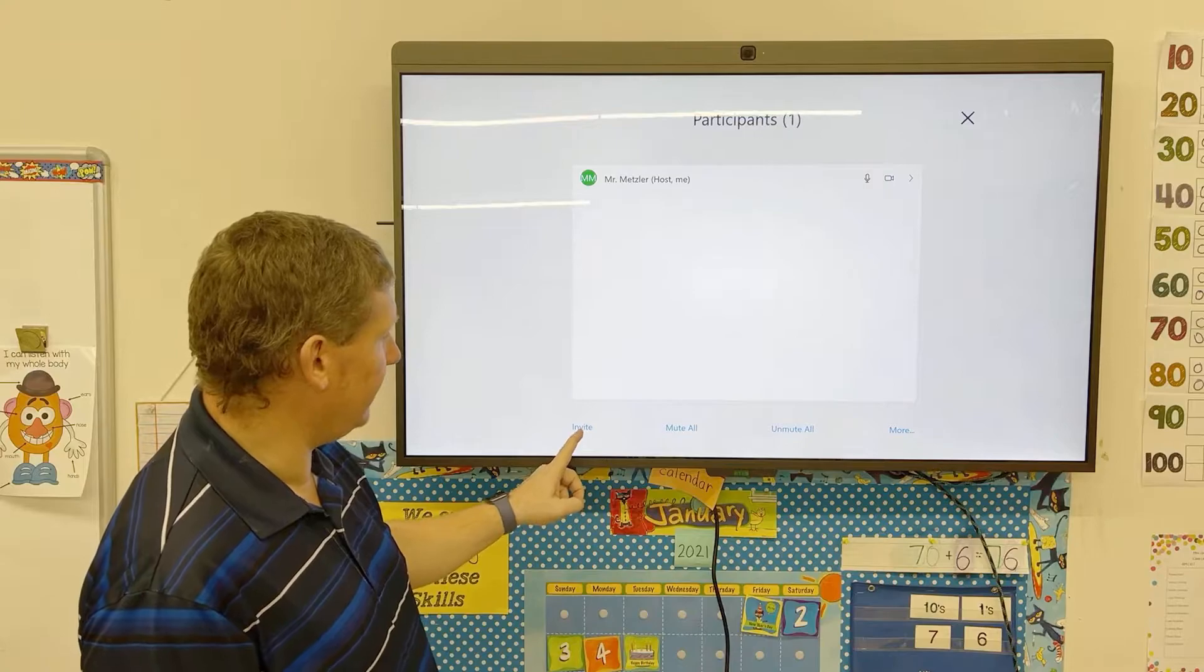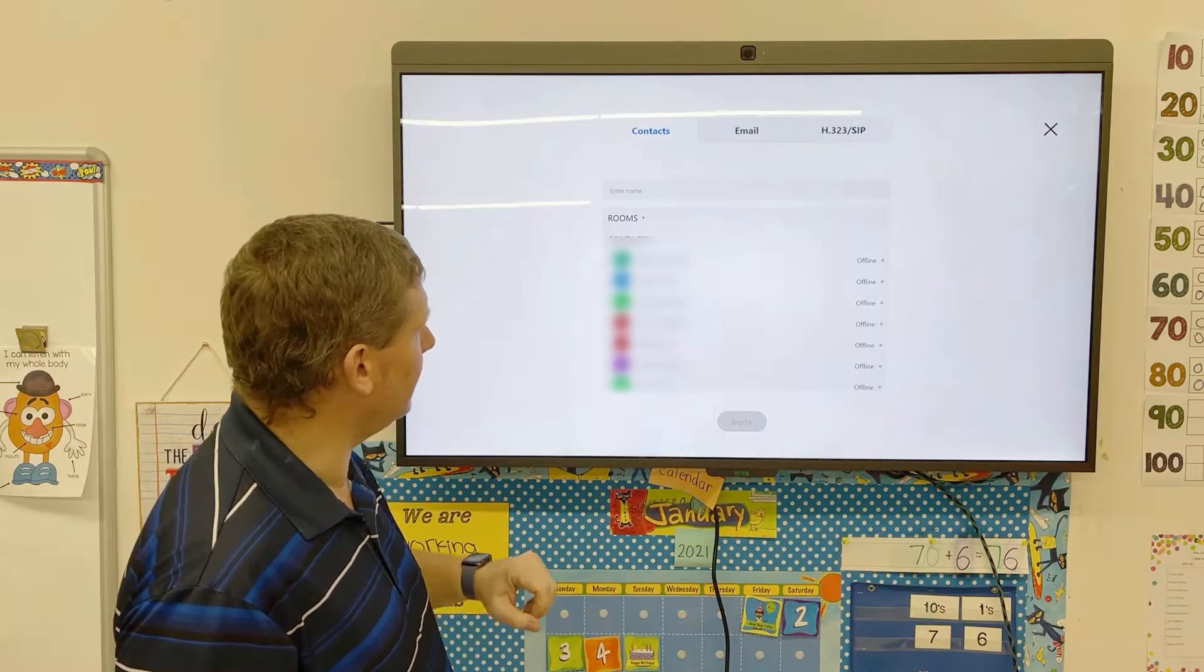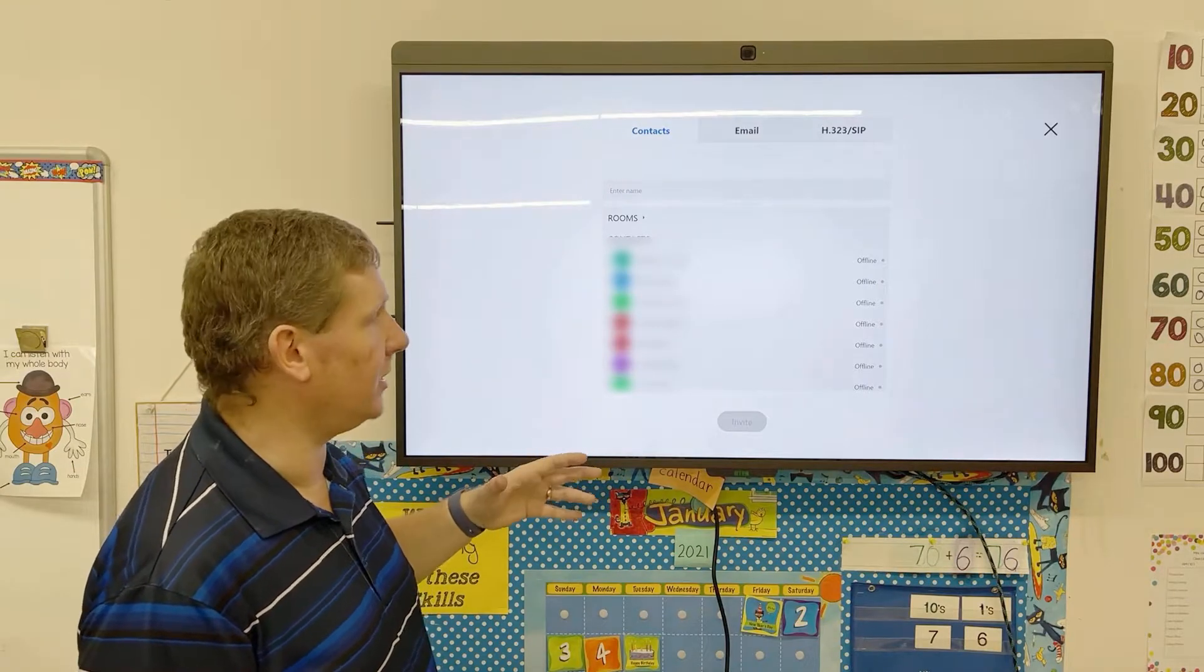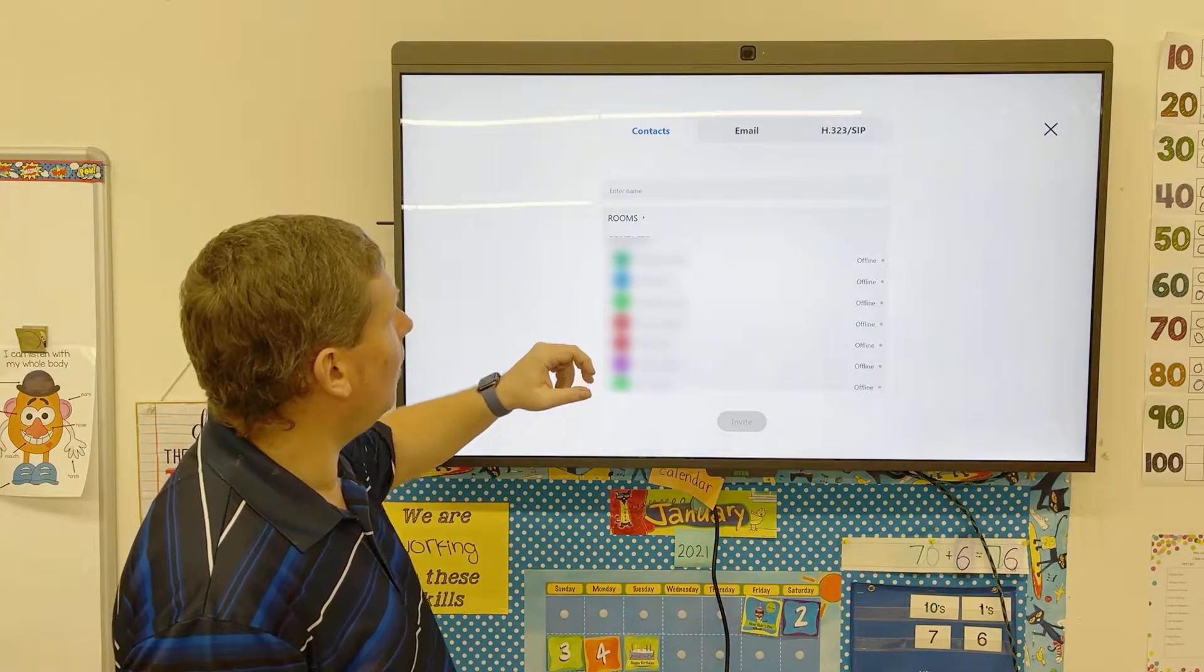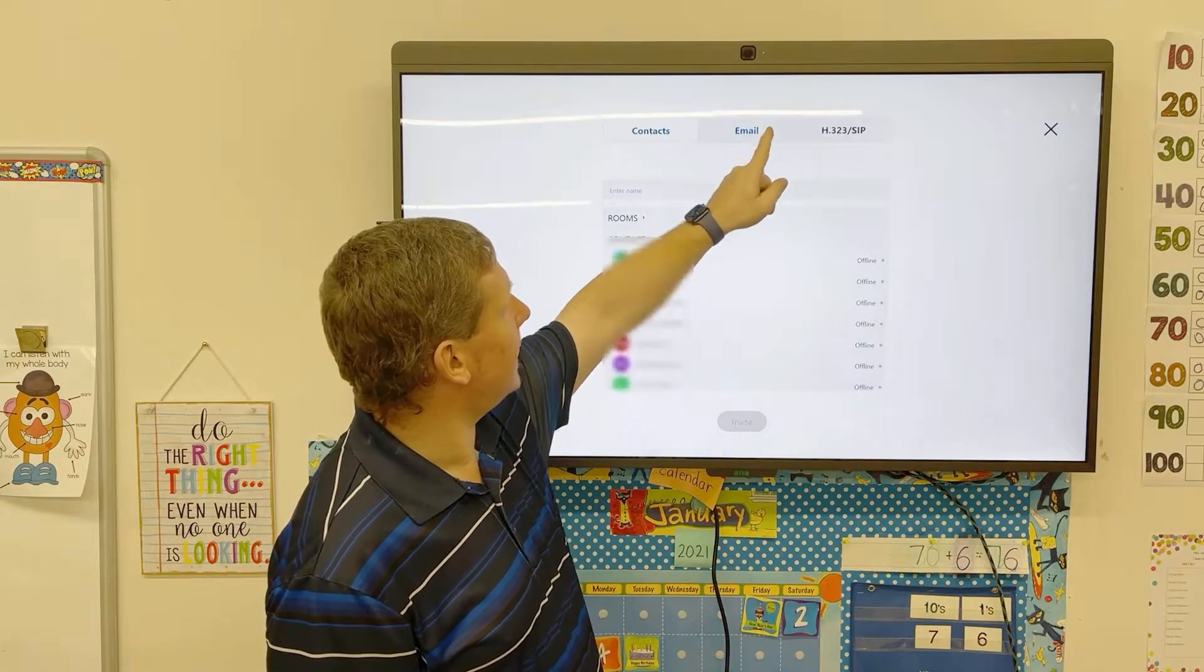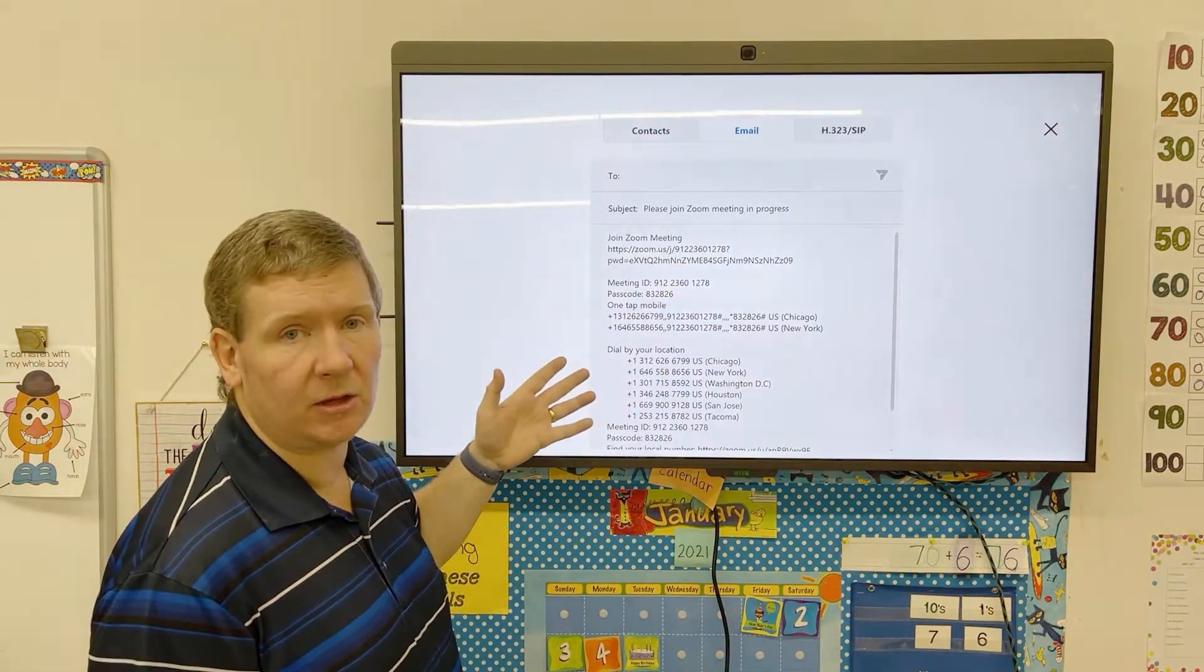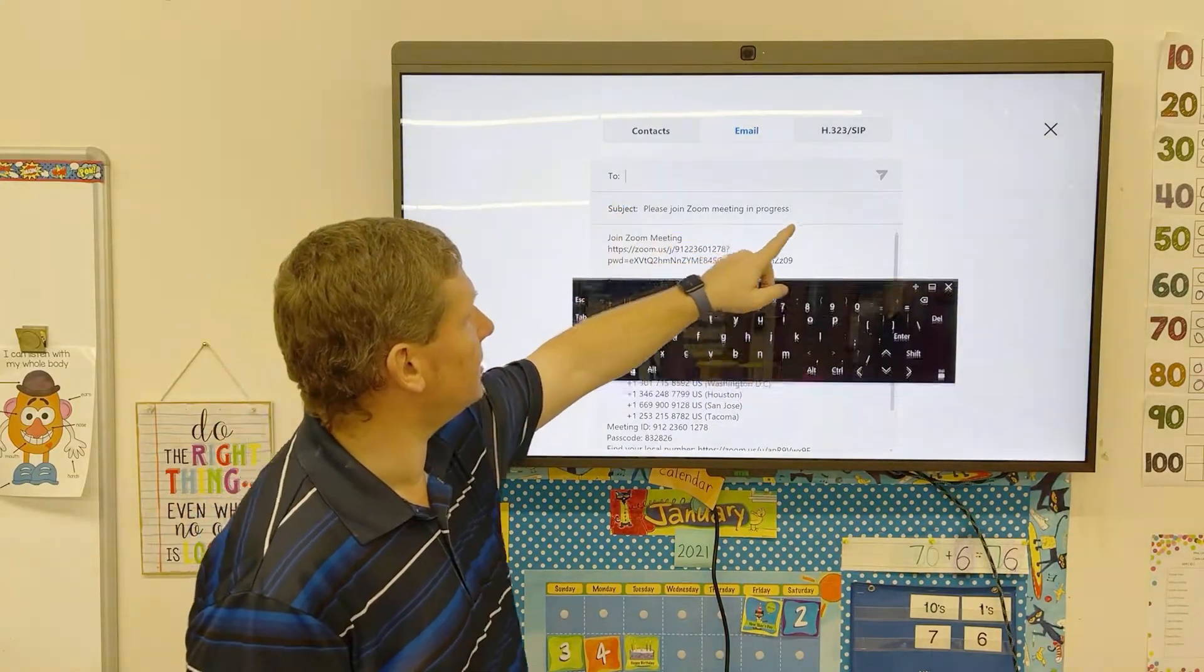You're going to tap Invite. Now, you're going to see a list of all the people in your contacts list that you can invite, and you can just tap on them to invite them. Or, you can click the Email tab here, and you can go ahead and put in the email addresses of the people you want to send this to.